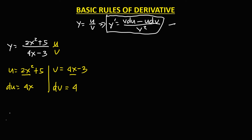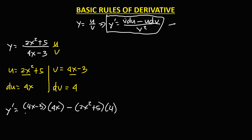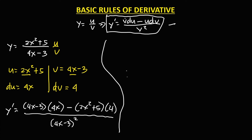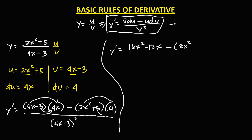Substituting into the formula: y prime equals v times du minus u times dv, over v squared — that is, 4x minus 3 times 4x, minus 2x squared plus 5 times 4, over 4x minus 3 to the power 2. Distributing: 16x squared minus 12x, then minus — we put parentheses because this is negative — 8x squared plus 20, over 4x minus 3 squared.